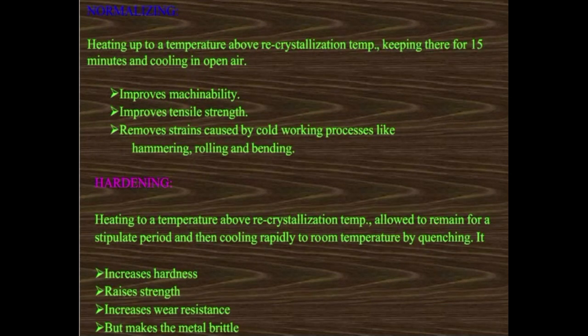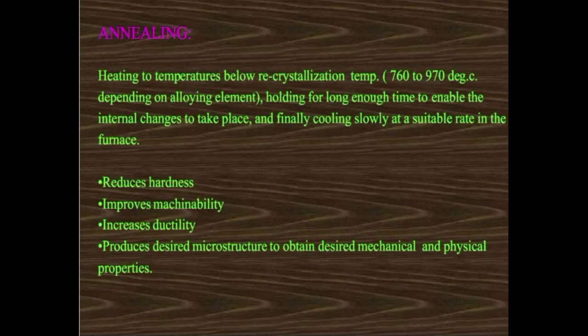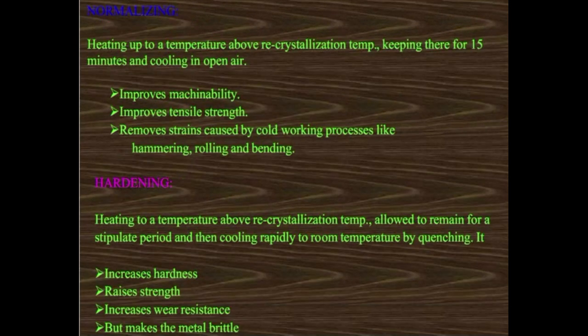Normalizing: unlike annealing which is below the recrystallization temperature, normalizing is heating above the recrystallization temperature, keeping there for 15 minutes, and then cooling in open air. Normalizing is done to improve the metallurgy, improve tensile strength, and remove strains caused by cold working processes like hammering, rolling, or bending.